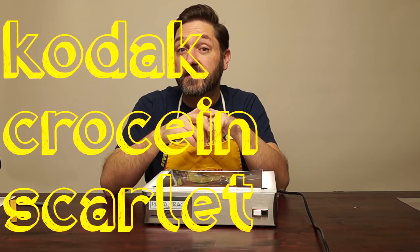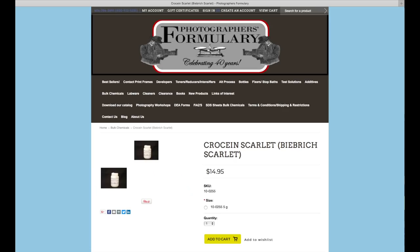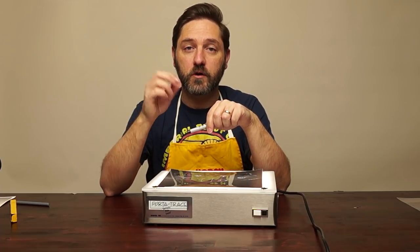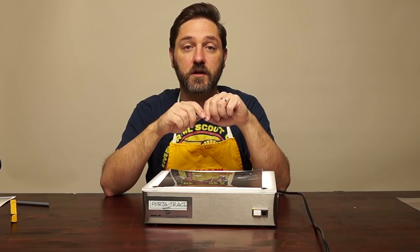Then you can use something called Crocine Scarlet. Now, Crocine Scarlet is still available. You can buy it online very easily in like 1 gram, 5 gram, and 25 gram increments or something like that. And it's a powder. You mix it with water. It makes a red dye. You put it on like a brush.